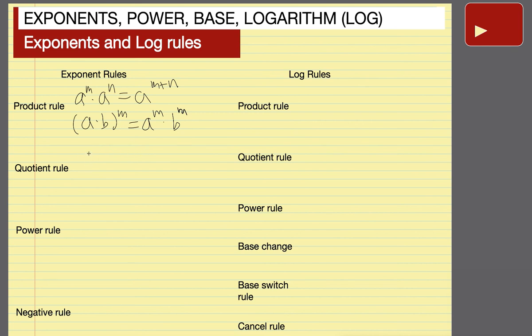The quotient rule says that a to the power of m divided by a to the power of n is equal to a to the power of m minus n. This can be derived from the product rule because a to the 1 over a to the n is just equal to a to the minus n.